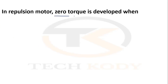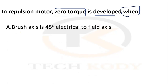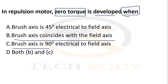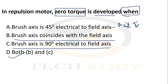In a repulsion motor, zero torque is developed when the brush axis is coincident with the field axis, and when the brush axis is at 90 degrees electrically to the field axis — both conditions B and C. Note that when the brush axis is at 45 degrees electrically to the field axis, that is the maximum torque condition, while B and C are the zero torque conditions.